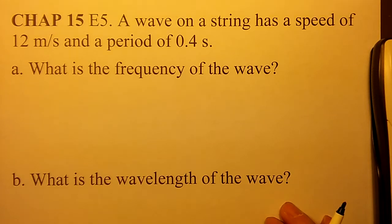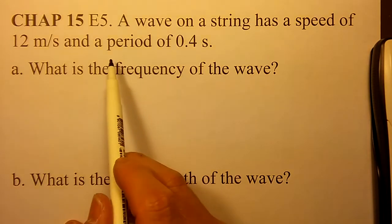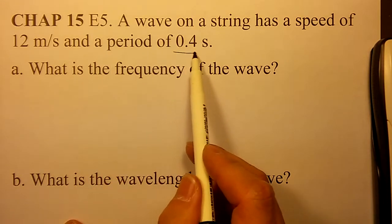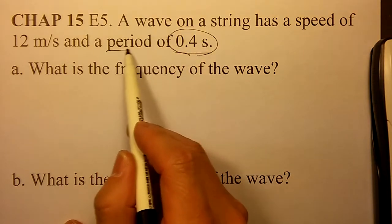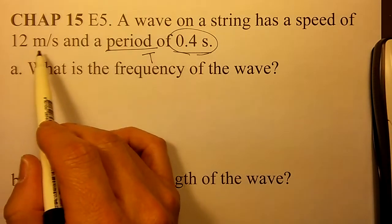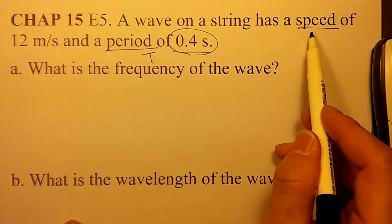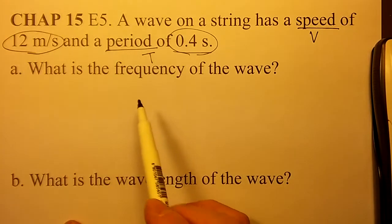Chapter 15 E5. A wave on a string has a speed of 12 meters per second and a period of 0.4 seconds. The period is T and the speed V is 12 meters per second.